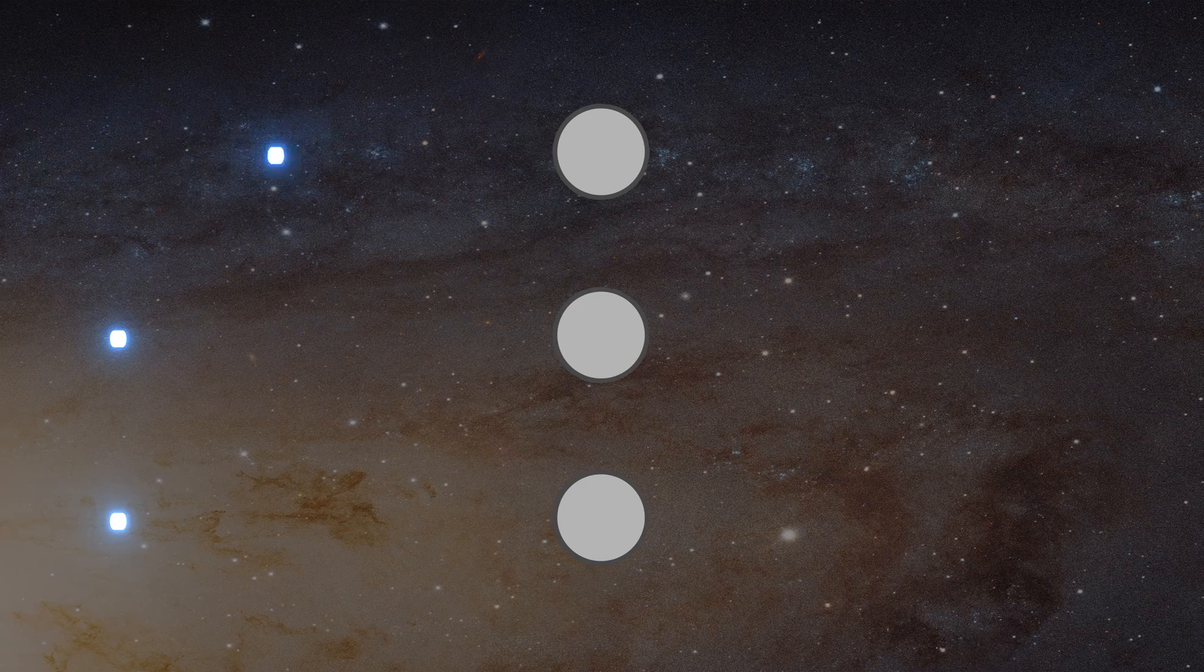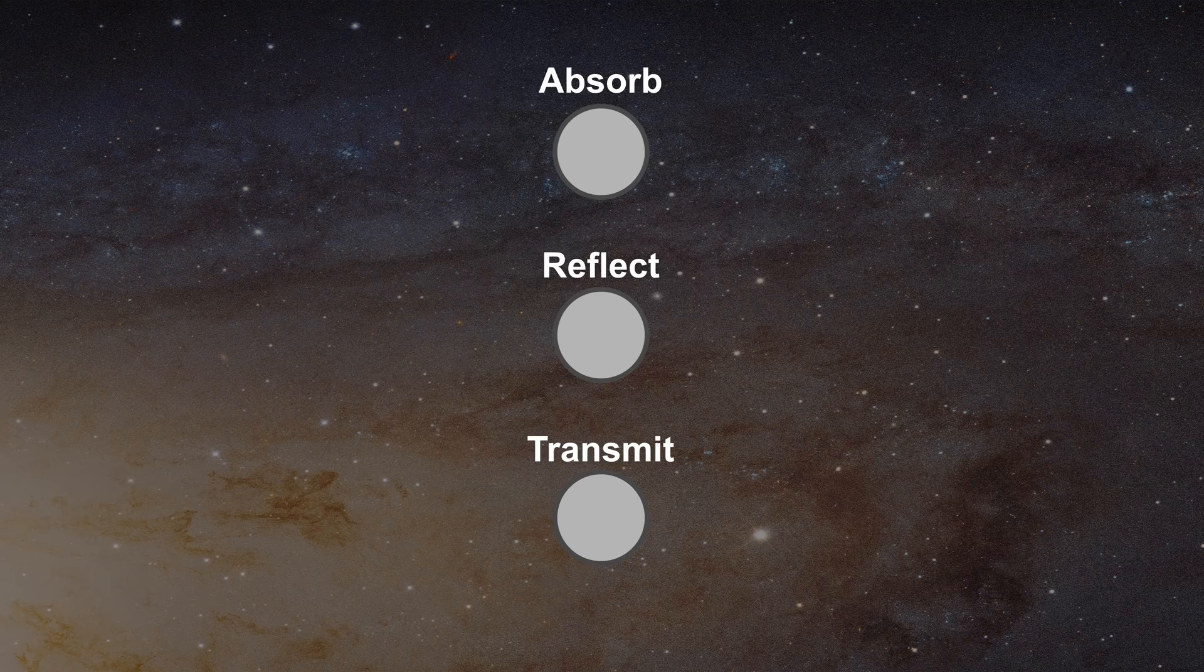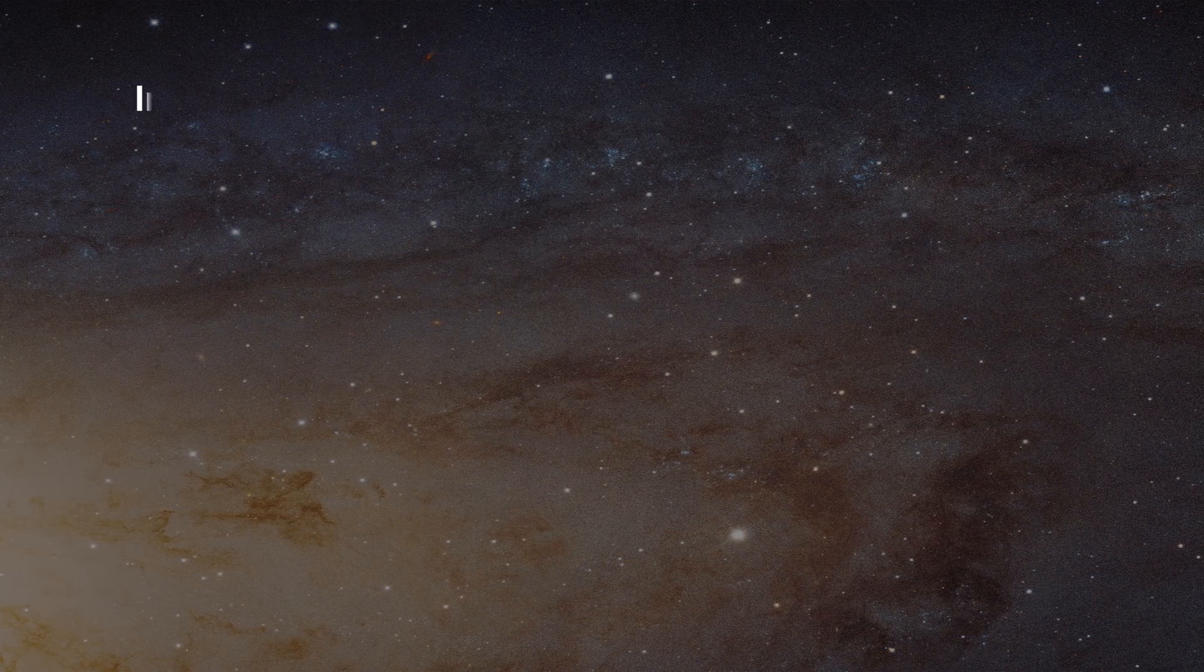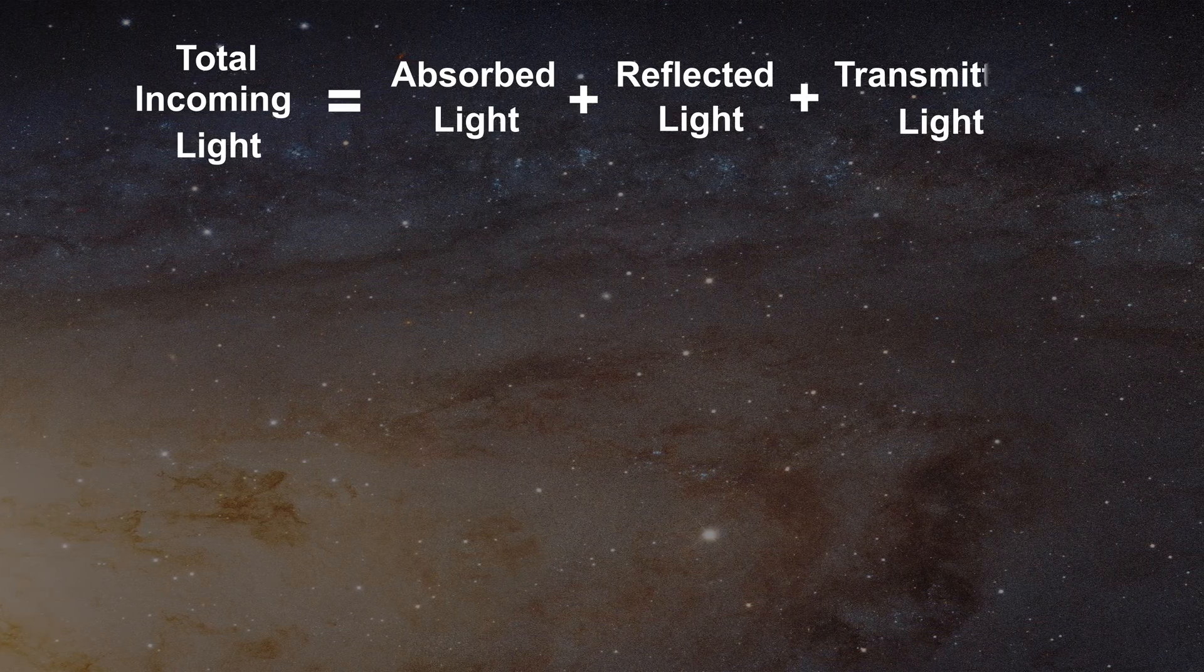The object can absorb the light, reflect it, or allow it to pass through. Since these are the only three options, we can write a simple equation: Total incoming light equals absorbed light plus reflected light plus transmitted light.